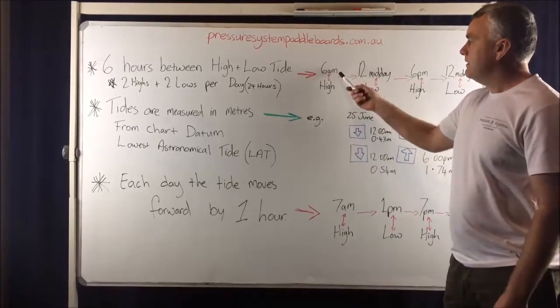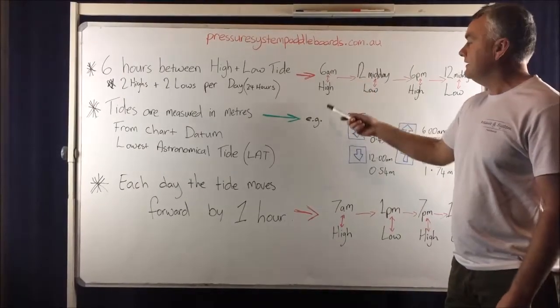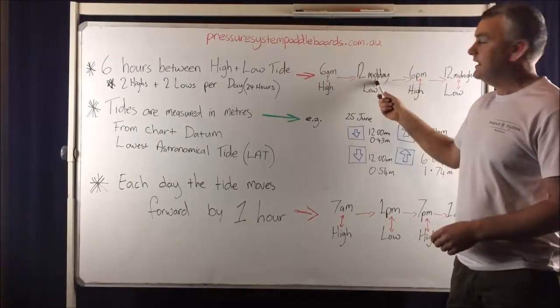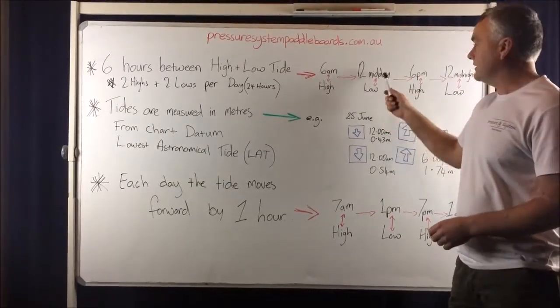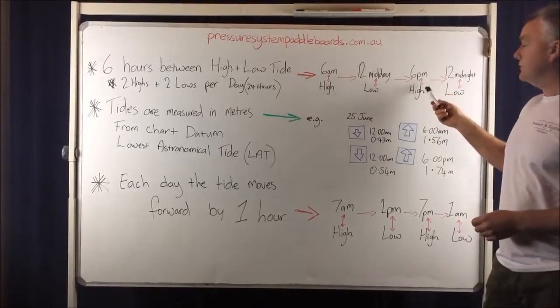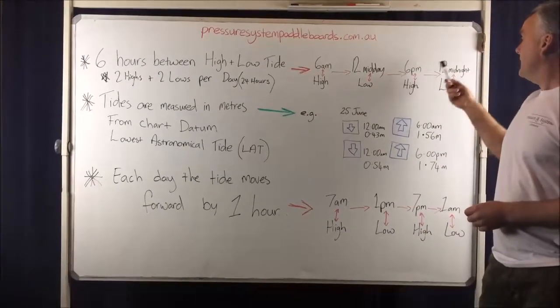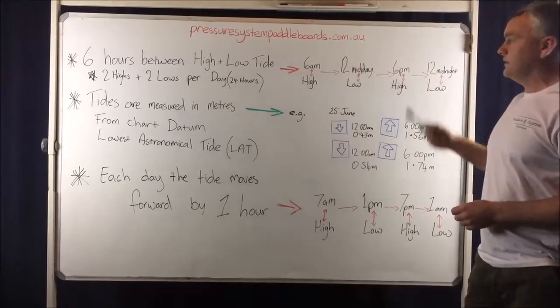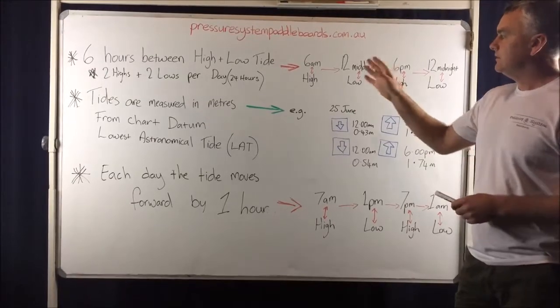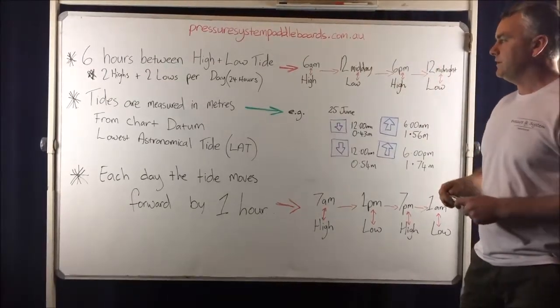In this example let's just say at 6am in the morning it's high tide. That means six hours later at 12 midday it will be low or near enough to 12 midday. And near enough to 6pm in the evening it'll be high again. And near enough to 12 midnight it'll be low again. So that's pretty simple. Six hours between high and low tide. So that means two highs two lows in a 24 hour period.